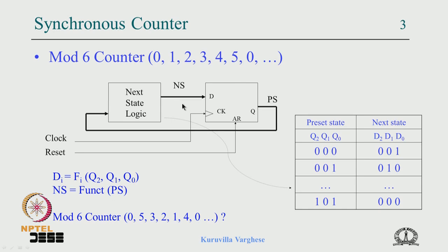Suppose you want to design a mod-6 counter that does not count in sequential order. The sequence could be different — for example: 0, 5, 3, 2, 1, 4, 0 and back. In that case it is simple: you just change the truth table to reflect this sequence, and you get that counter.